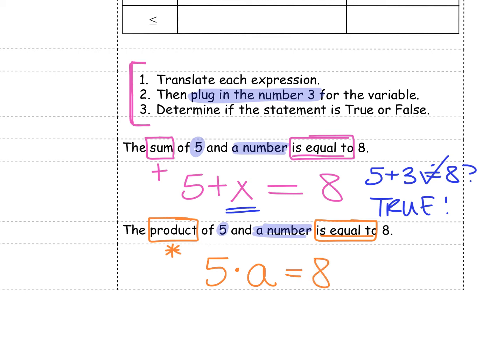Step 2 says to plug in the number 3 for my variable. So instead of a, I'm going to put a 3. 5 times 3, is that equal to 8? No. 5 times 3 is 15. So this time it was false.